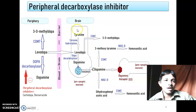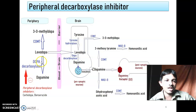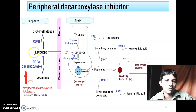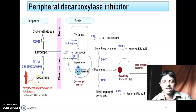Next is the peripheral decarboxylase inhibitor, like carbidopa. These drugs do not cross the blood-brain barrier — they act only in the periphery. Their function is to inhibit dopa decarboxylase in the periphery. If dopa decarboxylase is inhibited, conversion of levodopa to dopamine in the periphery will not occur, so more levodopa will be available to cross into the brain. That is the function of the peripheral decarboxylase inhibitor.